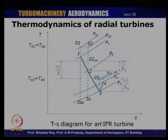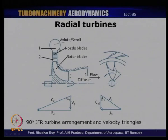Let us look at the temperature-entropy plot as we have done for other machines — compressors, axial turbines, and centrifugal compressors. The T-S diagram for a typical inward flow radial turbine: station 1 is the nozzle entry, station 2 is the nozzle exit, station 3 corresponds to rotor exit, and station 4 corresponds to the diffuser exit.